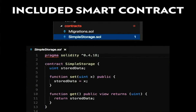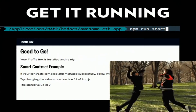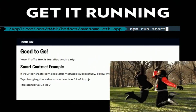The included smart contract — we're going to go over our own smart contract in Solidity because mine's a little bit better, honestly. Feel free to delete simple storage, but keep migrations — don't delete that, because that handles all of our migrations. Run npm run start and you're good to go.